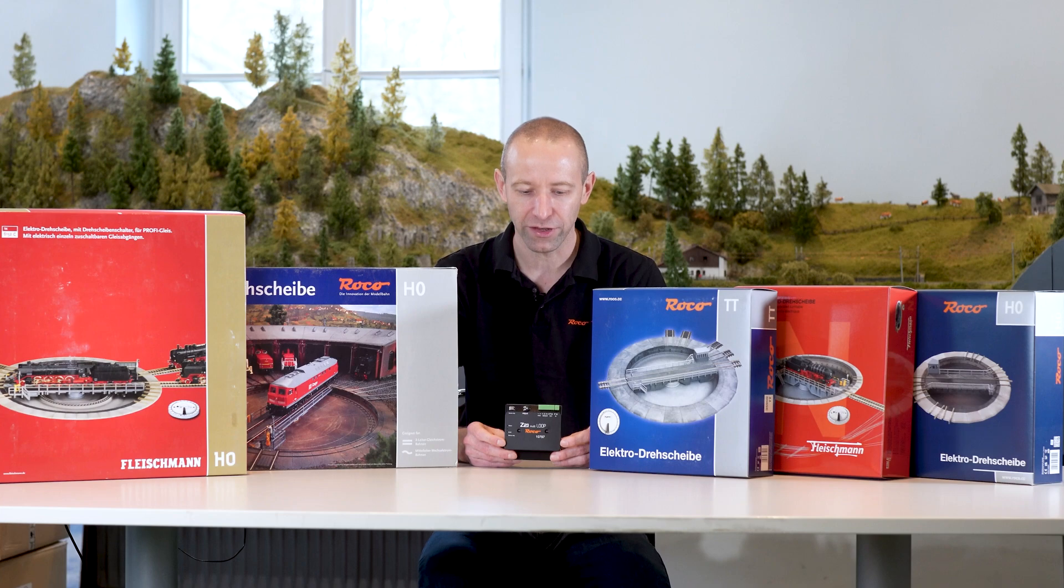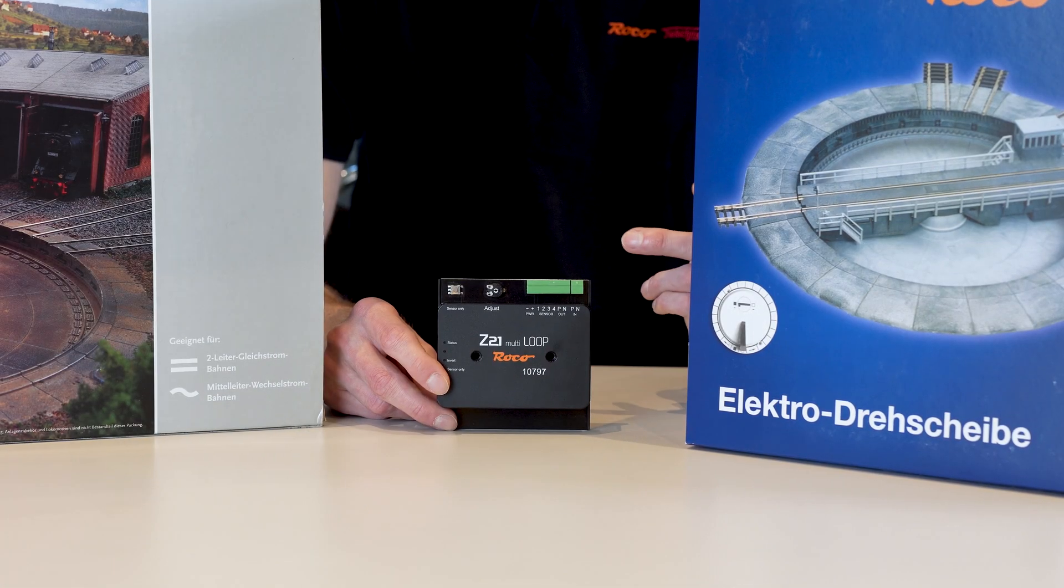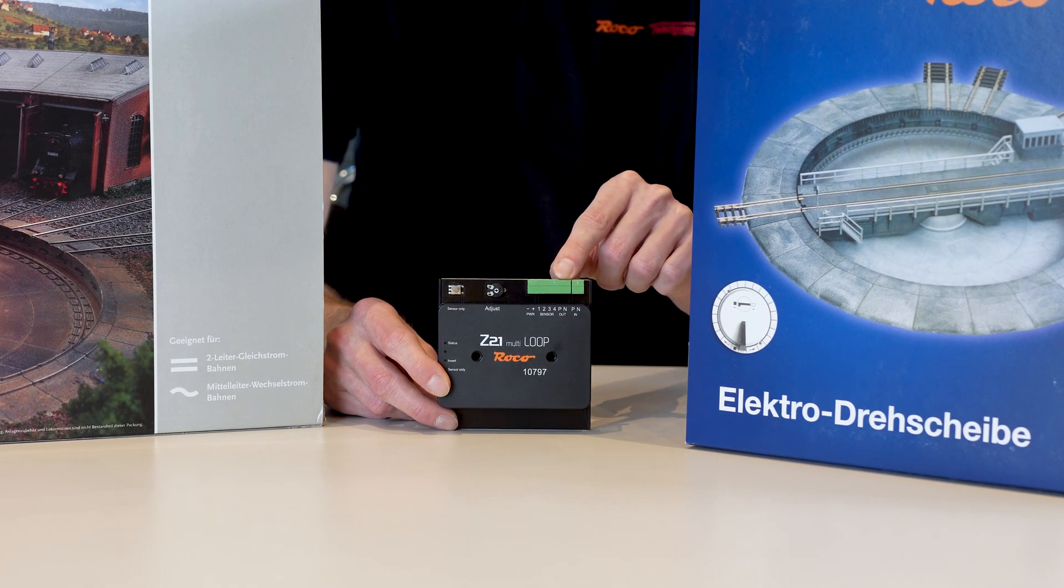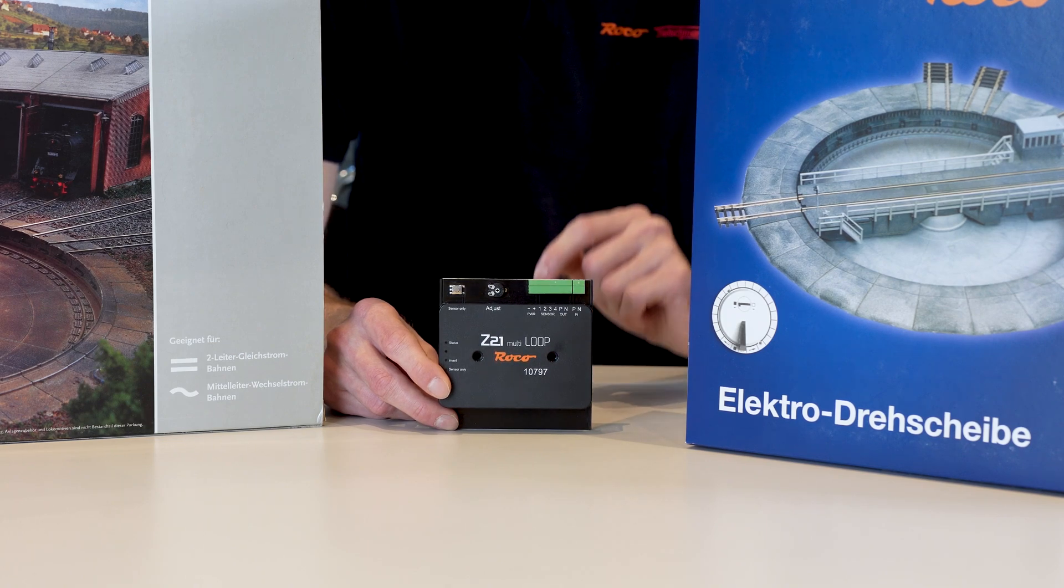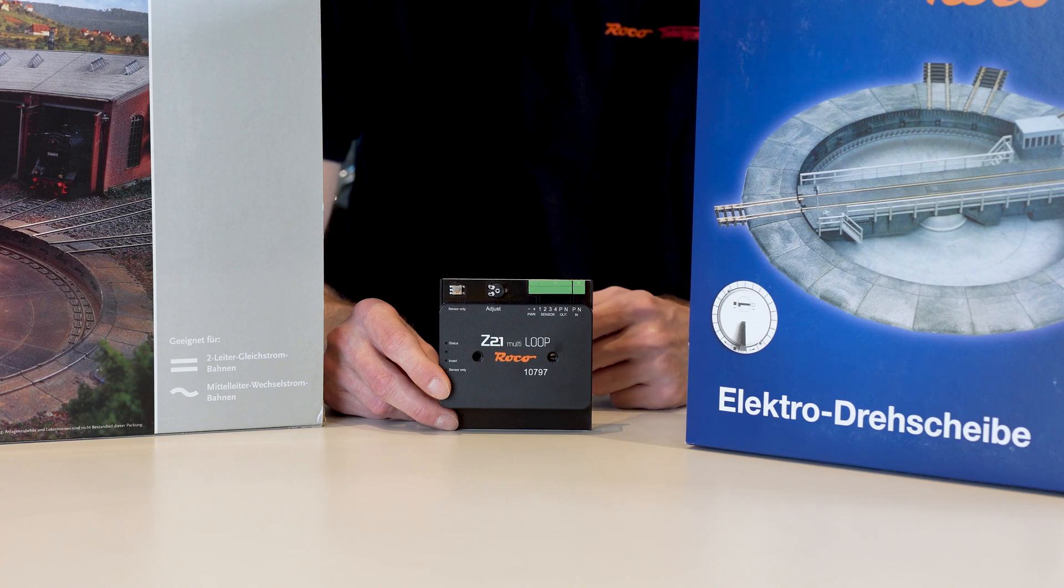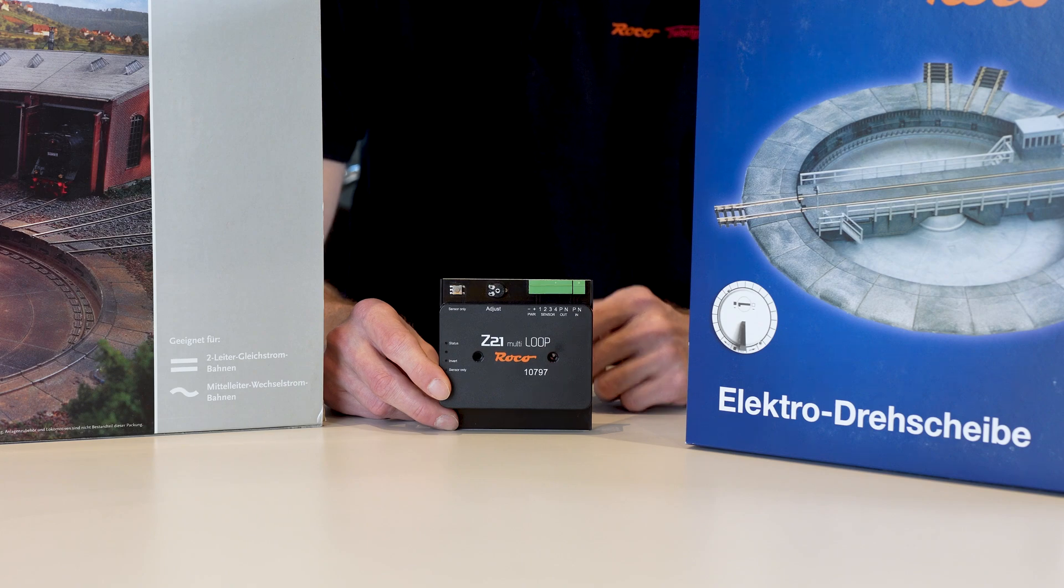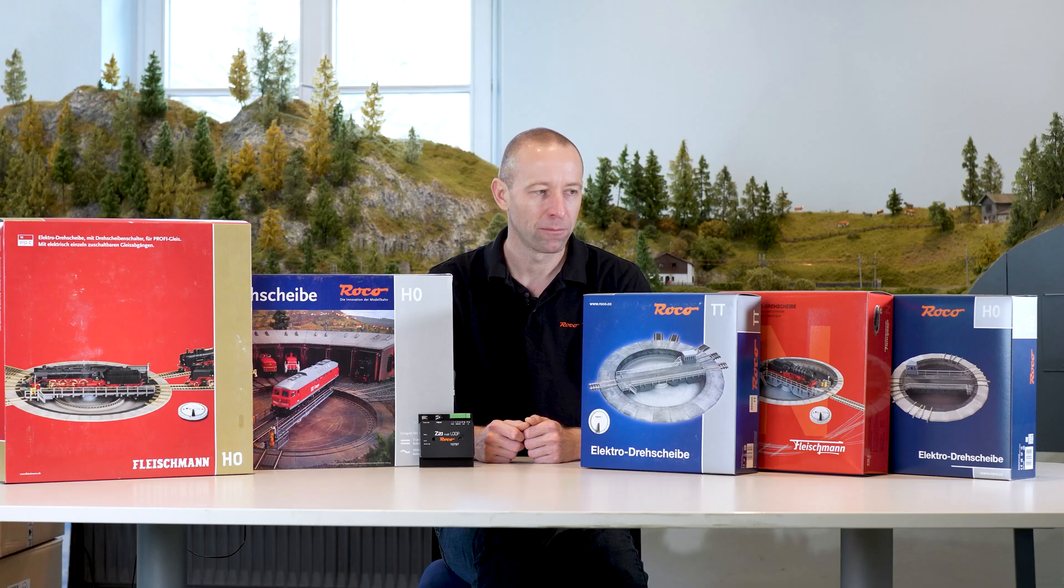I'll show you the whole thing together with our reverse loop module. The connection is similar for all turntables. I go from the output of the reverse loop module to the two cables from the platform voltage supply. So the reverse loop module reverses the polarity of the platform according to the turntable position. Depending on when you make a 180 degree turn and the locomotive enters or leaves the platform, you don't get a short circuit anymore.